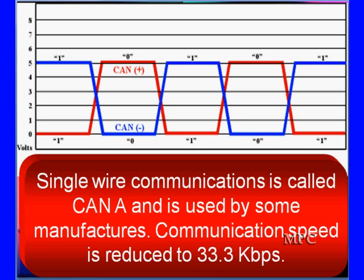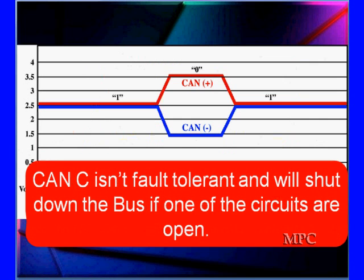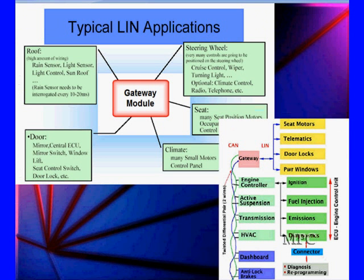Single wire CAN is called CAN-A and is used by some manufacturers. Speed is reduced - it's low speed CAN. CAN-C isn't fault tolerant and will shut down the bus if one of the circuits are open. Most CAN-C systems are set up to do this, though there are some that will still try to limp by with CAN plus or CAN high operable.